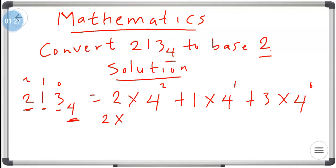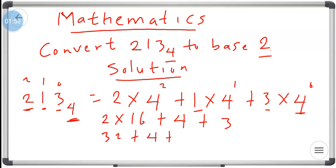So we have: 2 multiplied by 4 squared — that is 4 times 4 which is 16 — plus 4 to the power 1 which is 4, multiplied by 1, which is 4, plus 4 to the power 0 which is 1, multiplied by 3 which is 3. So we have 2 times 16, that's 32, plus 4, plus 3, and this gives us 39 base 10.